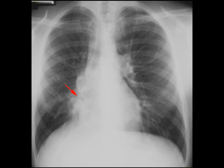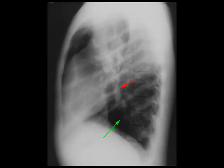Additionally, the red arrow points to a vertically oriented tubular structure. On the lateral radiograph, this tubular structure is again identified by the red arrow. The green arrow corresponds to a hyperlucent left lower lobe secondary to compensatory hyperinflation. Findings are consistent with scimitar syndrome.